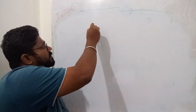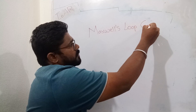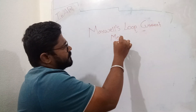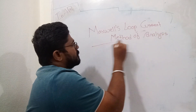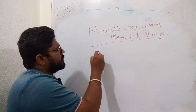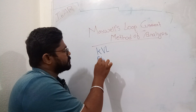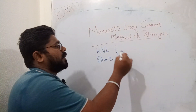In this video we are going to see what is Maxwell's loop current method of analysis. This is an extension to mesh analysis. In this method we make use of Kirchhoff's voltage law and we form equations using Ohm's law in order to find the loop currents.